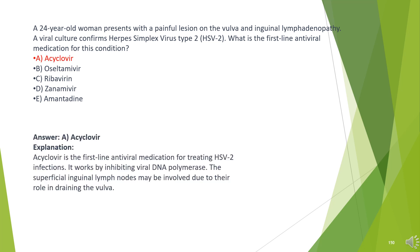The answer is A. Acyclovir. Acyclovir is the first-line antiviral medication for treating HSV-2 infections. It works by inhibiting viral DNA polymerase. The superficial inguinal lymph nodes may be involved due to their role in draining the vulva.